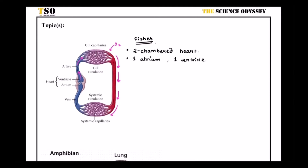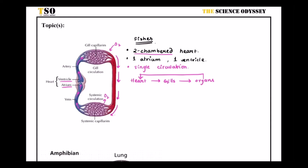The oxygenated blood then moves into the systemic circulation, reaching the different organs of the body. After giving off oxygen to the organs, the blood becomes deoxygenated again and moves through the veins back into the heart. There is only one cycle of blood, which is why this is called single circulation. The ventricle pumps blood to the gills, and the atrium receives blood from the veins. So the path is: heart → gills → organs → heart.